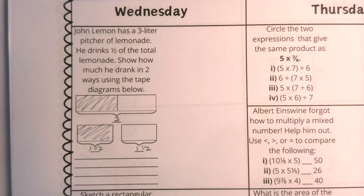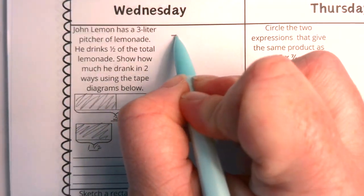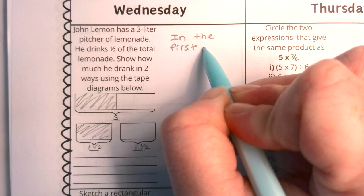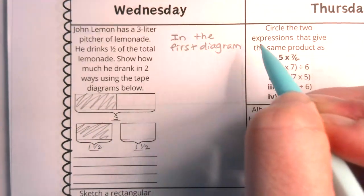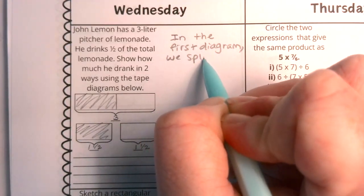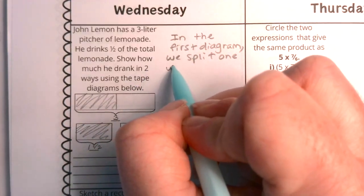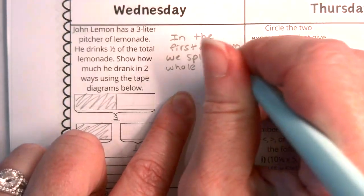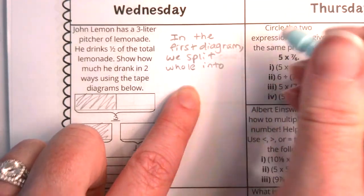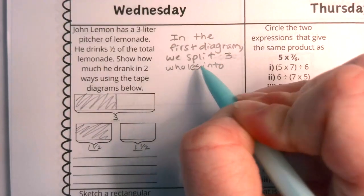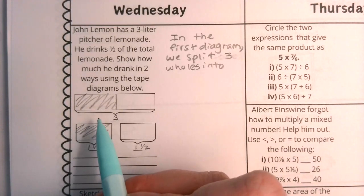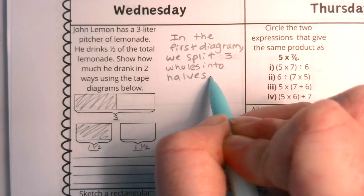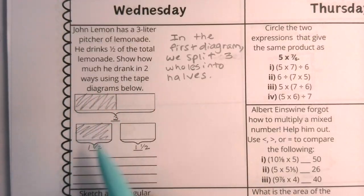Since we do have the lines below, I can infer that they're wanting me to explain. I'm going to write it here because I tend to write a little bit big and this way you can write along with me. In the first diagram — remember guys, these are tape diagrams — in the first diagram we split three wholes shown in one tape diagram into halves. That's exactly what we're seeing here.